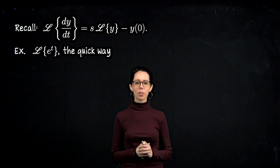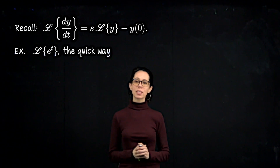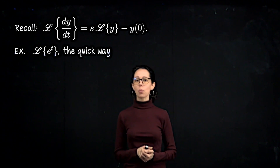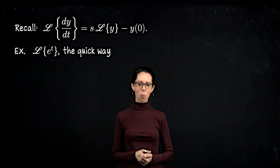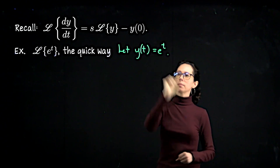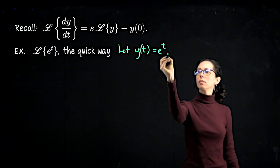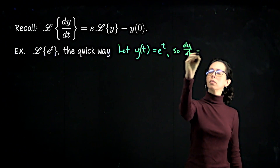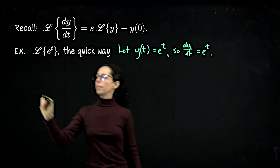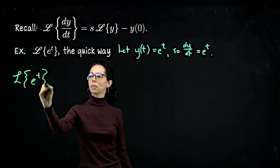Let's find the Laplace transform of e to the t again — the short way — avoiding the integral definition. We'll use the identity that given some function y of t, the Laplace transform of dy/dt can be expressed in terms of the original Laplace transform of y. Here we let y of t equal e to the t. This is great because dy/dt is also e to the t. So the Laplace transform of dy/dt is just the Laplace transform of e to the t.